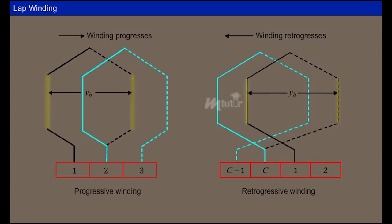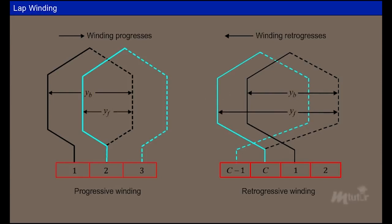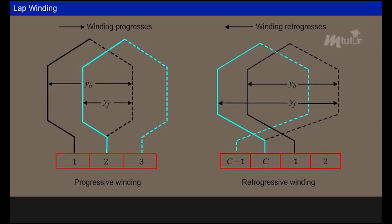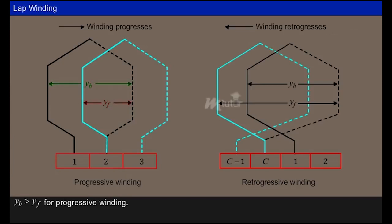The displacement between the sides of a coil measured in terms of armature conductors is called the back pitch yb. The front pitch yf is the displacement between the completing side of one coil and the starting side of the successive coil measured in terms of armature conductors. For progressive winding, the back pitch is greater than the front pitch, and for retrogressive winding, the front pitch is greater than the back pitch.